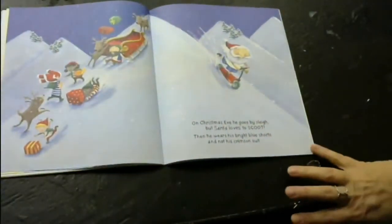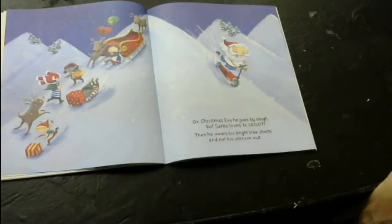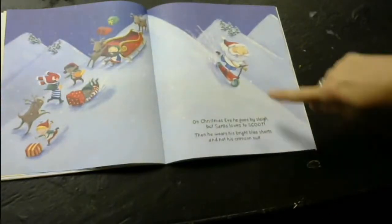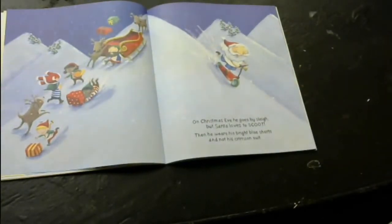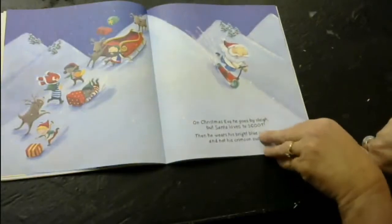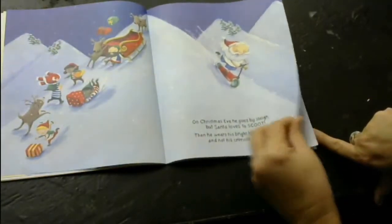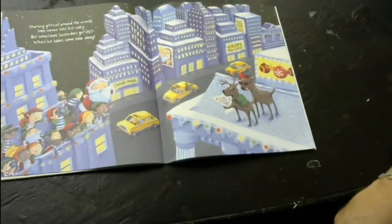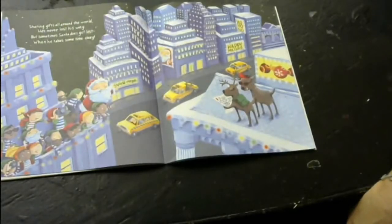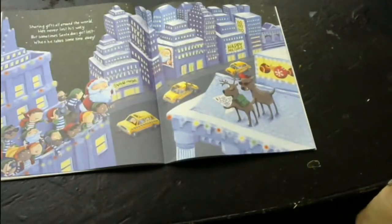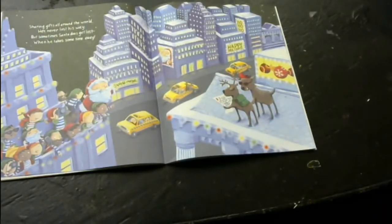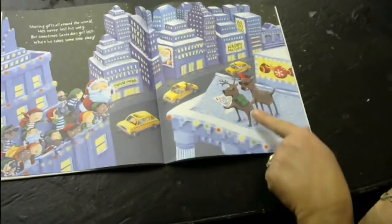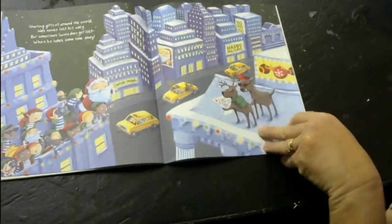On Christmas Eve, he goes by sleigh, but Santa loves to scoot. Then he wears his bright blue shorts and not his crimson suit. Crimson's another shade of red. Sharing gifts all around the world, he's never lost his way. But, sometimes Santa does get lost when he takes some time away. Because he didn't have his Santa sleigh GPS going. So, he's dependent on the map over here and the reindeer. And people are lost.